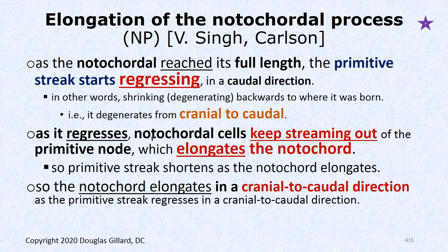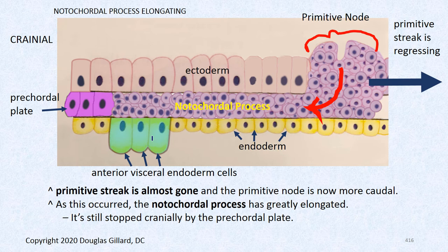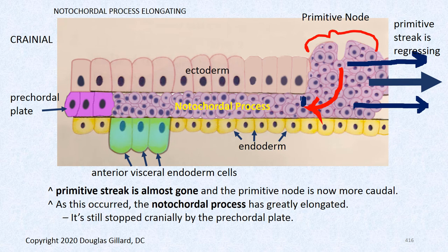Elongation of the nodal chordal process: once the notochord reaches its full length, the primitive streak starts regressing backwards and keeps spitting out notochordal cells as it regresses. So at that point the notochord elongates cranial to caudal. Earlier it elongates caudal to cranial — it's confusing. As the primitive streak regresses, the primitive node moves backward and cells keep getting spit forward, so the notochord elongates.